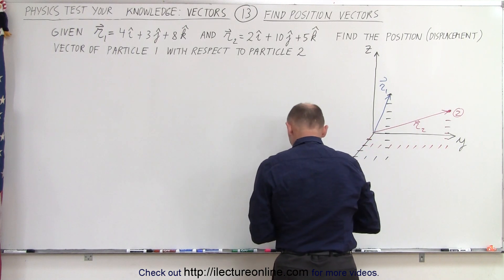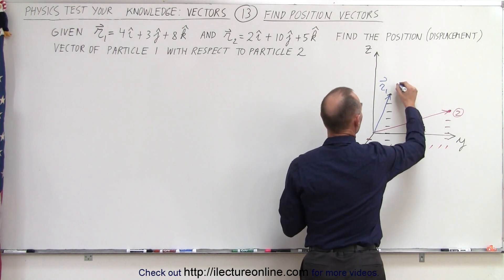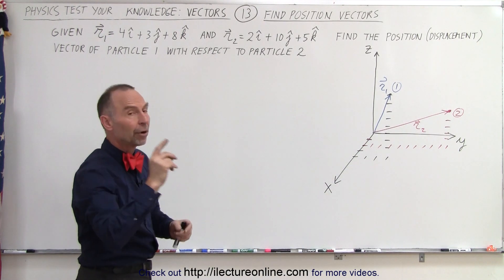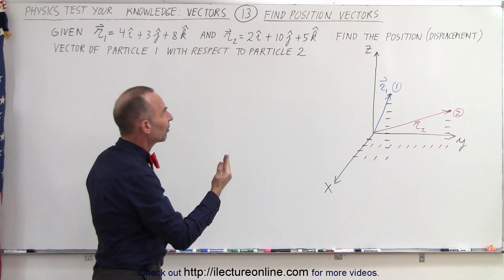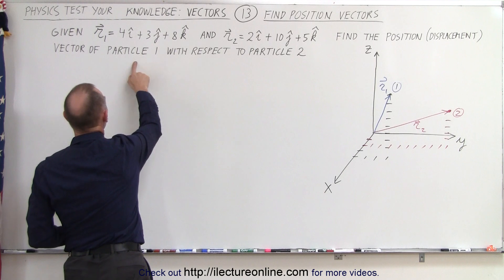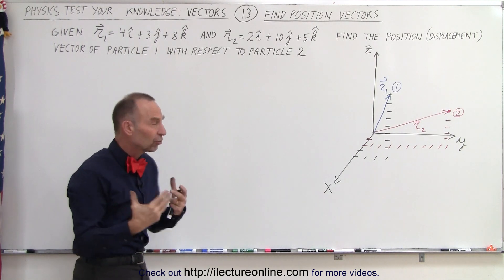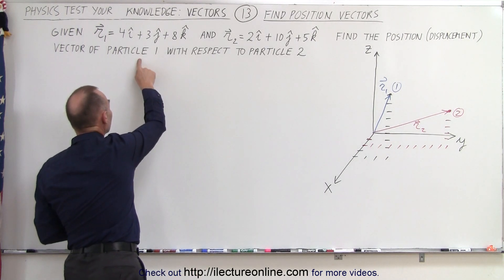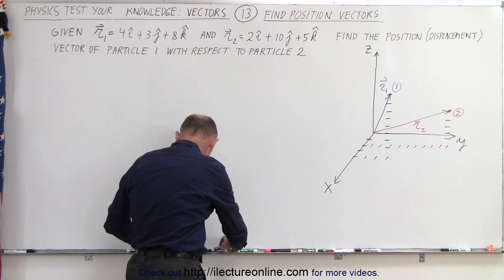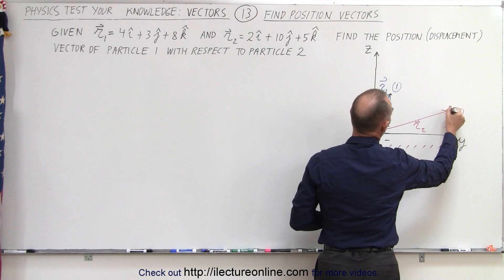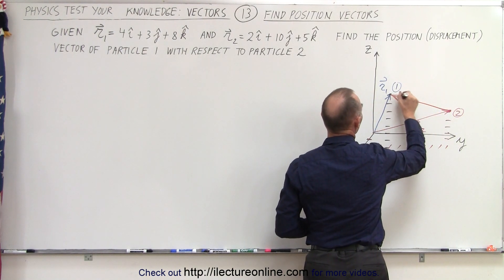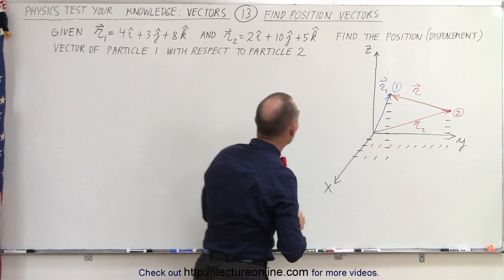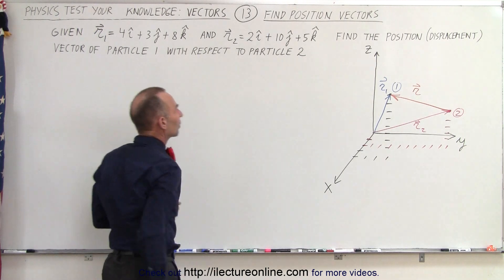This is the position vector to particle 1. Now let's draw a vector from particle 2 to particle 1 — that represents the position or displacement vector of particle 1 with respect to particle 2. When you say 'with respect to,' that is the start of the vector, and where the vector ends is the particle in question. So we draw a vector from here to here, and that's the vector R — the position or displacement vector giving us the position of particle 1 with respect to particle 2.